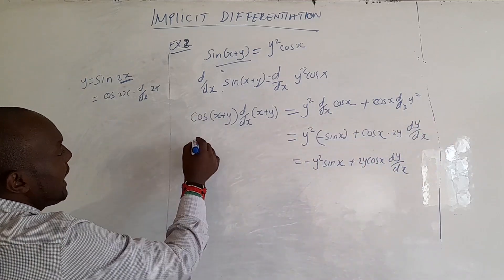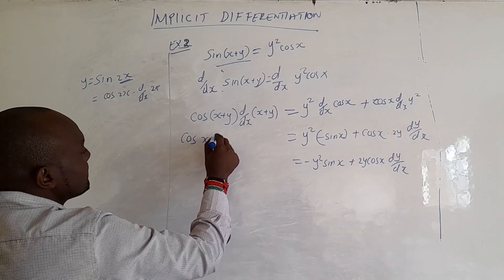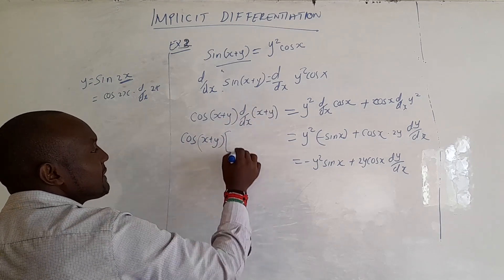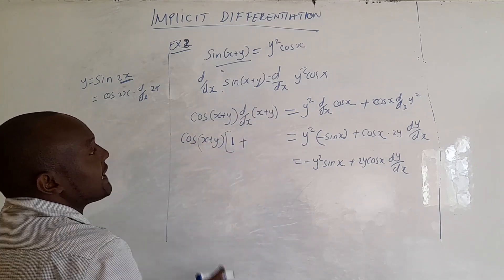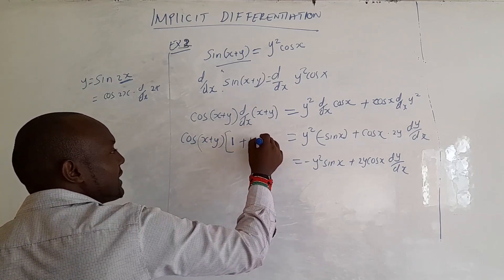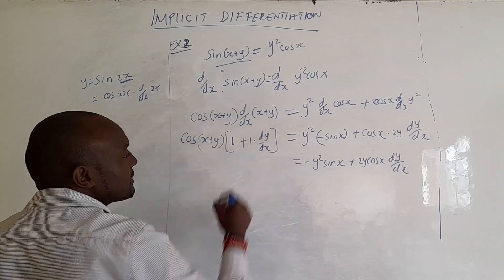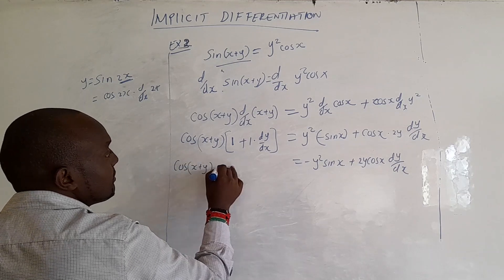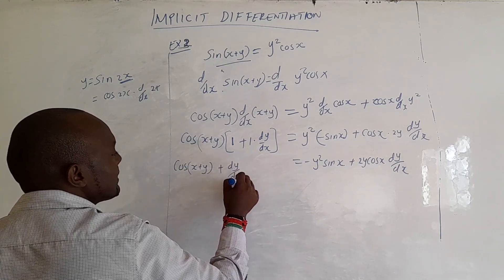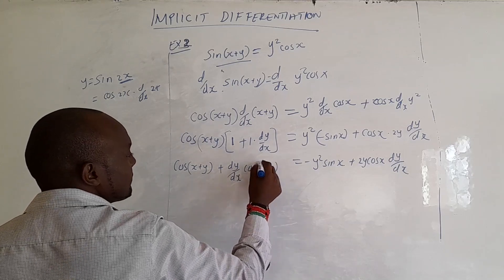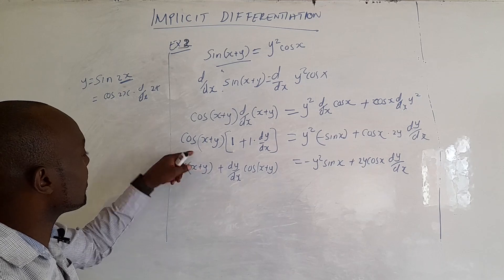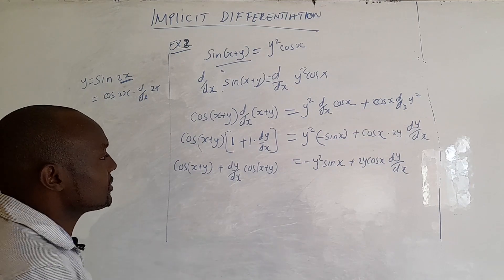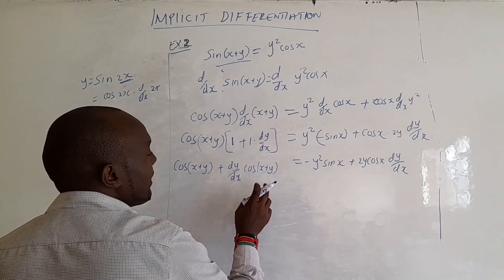On the left-hand side we have cos(x+y) multiplied by the derivative of (x plus y). Differentiating x with respect to x gives 1, and differentiating y gives dy/dx. Opening the bracket: cos(x+y) times 1 plus cos(x+y) times dy/dx. So the left-hand side becomes cos(x+y) plus cos(x+y) dy/dx. Remember we are solving for dy/dx so we must make it the subject.